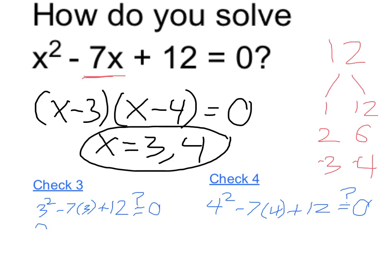3 squared is 9, minus 7 times 3 is 21, plus 12. I want to see if that's equal to 0. So 9 minus 21 is going to be negative 12, plus 12 is equal to 0, so that one checks out.